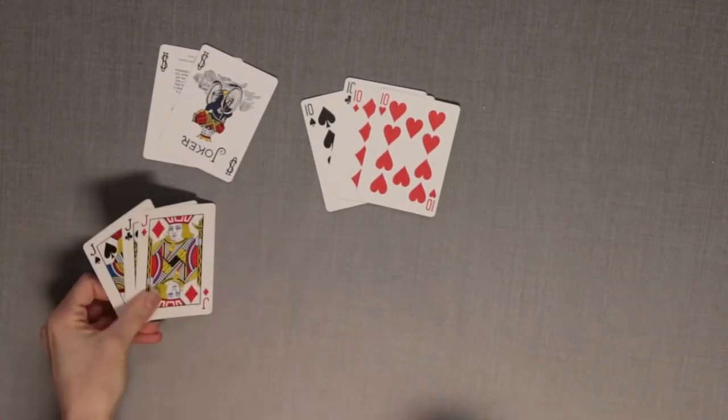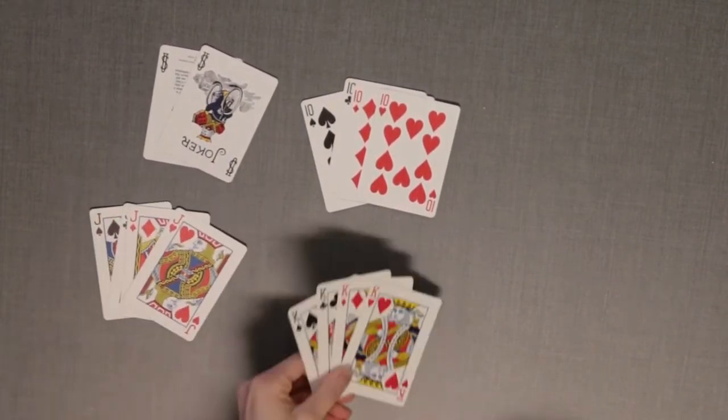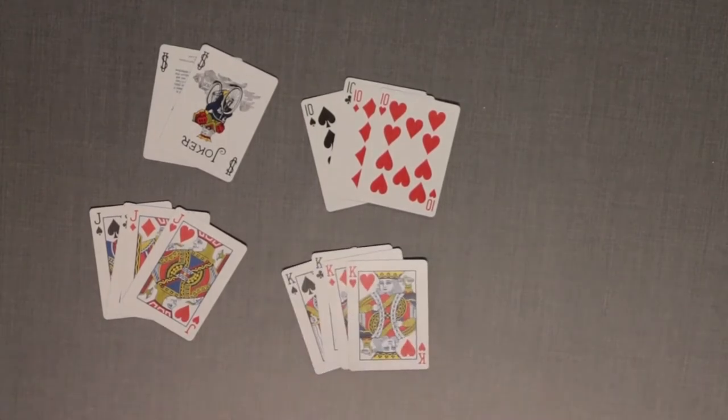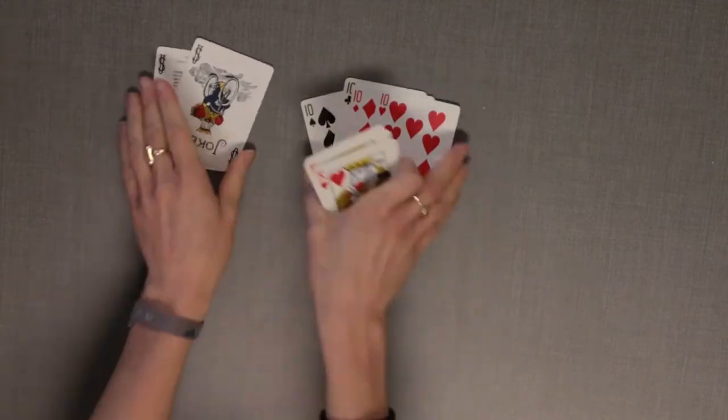Before you start, remove all the jokers, tens, jacks, and kings from the deck of cards. The number cards represent the value on the card, queen equals zero and ace equals one.